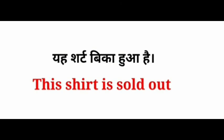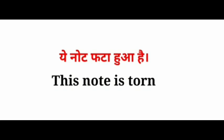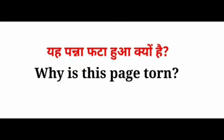Next example: वो शर्ट प्रेस की हुई है — That shirt is ironed. Next: कुर्सी टूटी हुई है — The chair is broken. When someone sits in a broken chair, we say this. Next example: यह नोट फटा हुआ है — This note is torn. 'Torn' means फटा. Next: यह नोट फटा हुआ क्यों है — Why is this note torn? Here we are putting a question to someone.